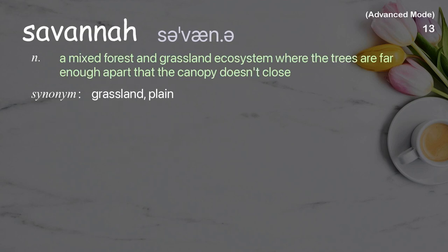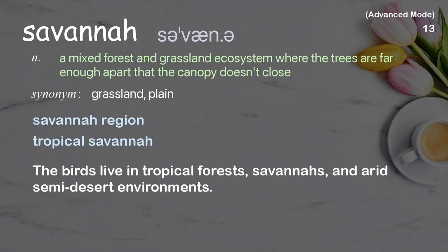Savannah: a mixed forest and grassland ecosystem where the trees are far enough apart that the canopy doesn't close. The birds live in tropical forests, savannahs, and arid semi-desert environments.